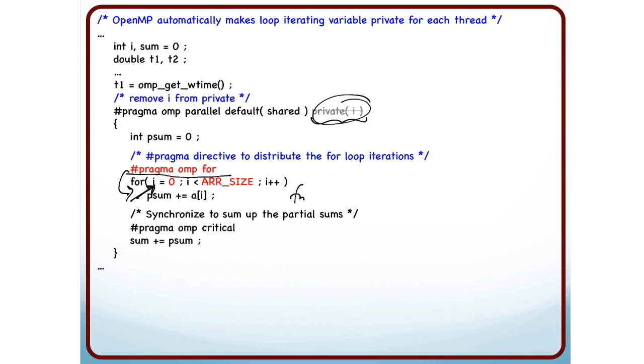If I write another for loop for k equal to 0, k is less than 10, k plus plus - so if I have this kind of a loop inside this i loop, then each thread will execute this loop from 0 to 9.